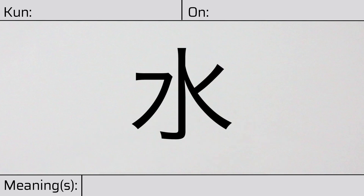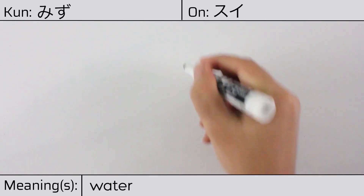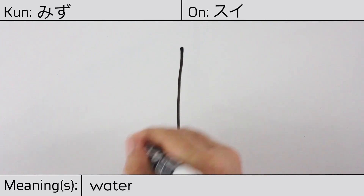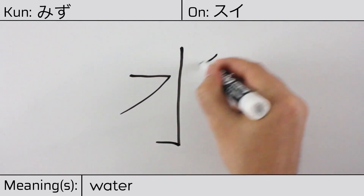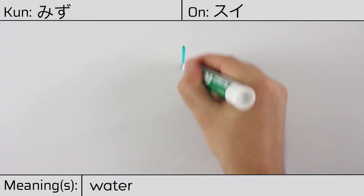Welcome to this lesson on Japanese kanji. Today, we'll be discussing this character. This kanji has kunyomi or Japanese reading of mizu, and it has onyomi or Chinese reading of sui. This character has the meaning water. Here is the stroke order.